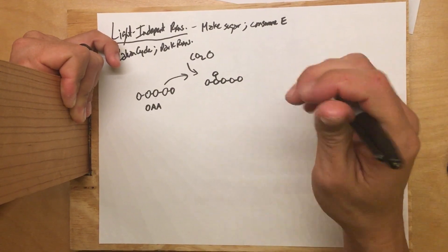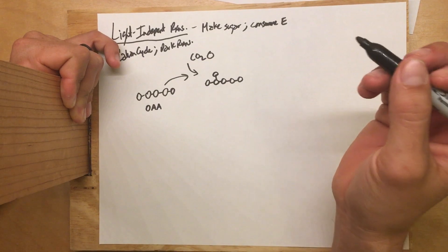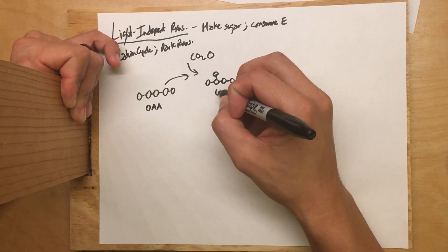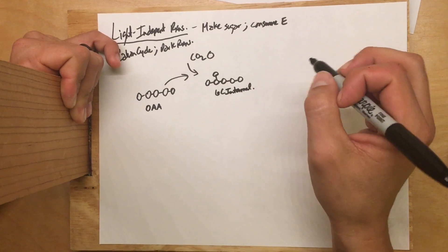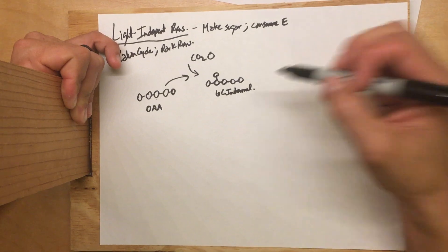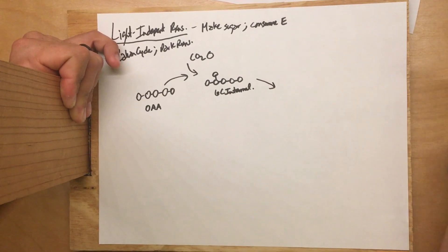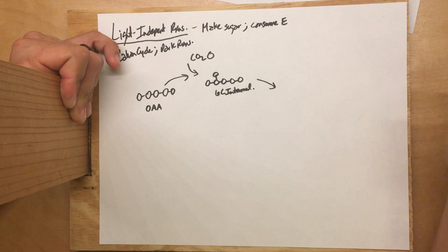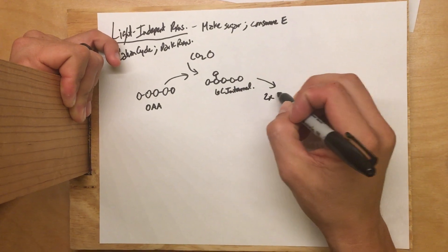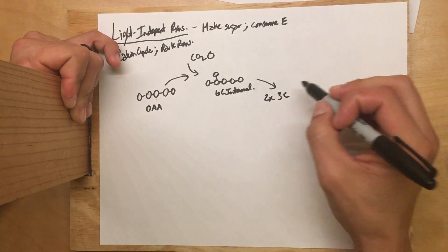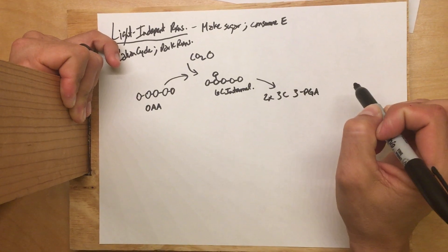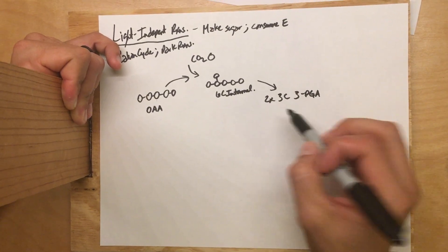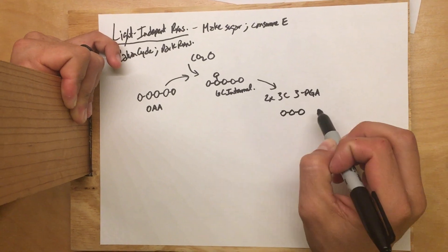This six-carbon molecule looks kind of goofy — it actually has like a branch. This six-carbon molecule is going to exist for a very short time; it's a very short-lived intermediate, so we don't even give it a name. This is just the six-carbon intermediate. Almost as soon as we form it, it's going to fall apart and turn into two molecules that are each three carbons long.